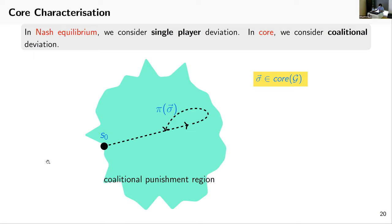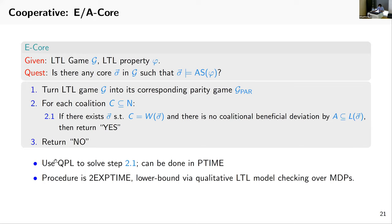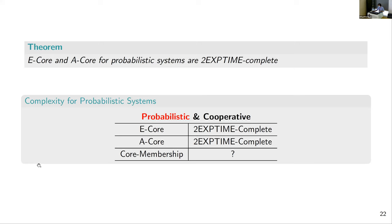For core, recall in Nash equilibrium we consider single player deviation, but in core we consider coalition deviation. So instead of finding just a punishment region, we find a coalition punishing region. Inside this region, every coalition can be punished. To find a core, we turn game G into its parity game G̅. Then we ask for each coalition C: if there exists a strategy profile σ such that C is exactly the set of winning players under σ, and if there exists no coalition beneficial deviation, then we know that σ is a core of the game. To solve this step, it can also be done with quantitative parity logic, and this can be done in polynomial time. So we have a double exponential procedure, and we reduce again to qualitative LTL model checking for MDPs. Then we have E-Core and A-Core are both double exponential time complete.